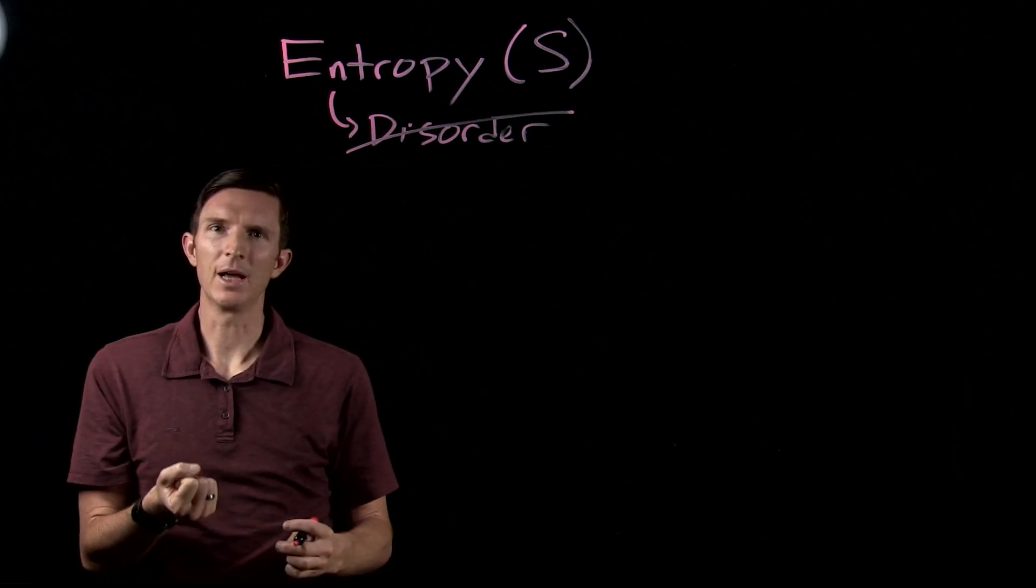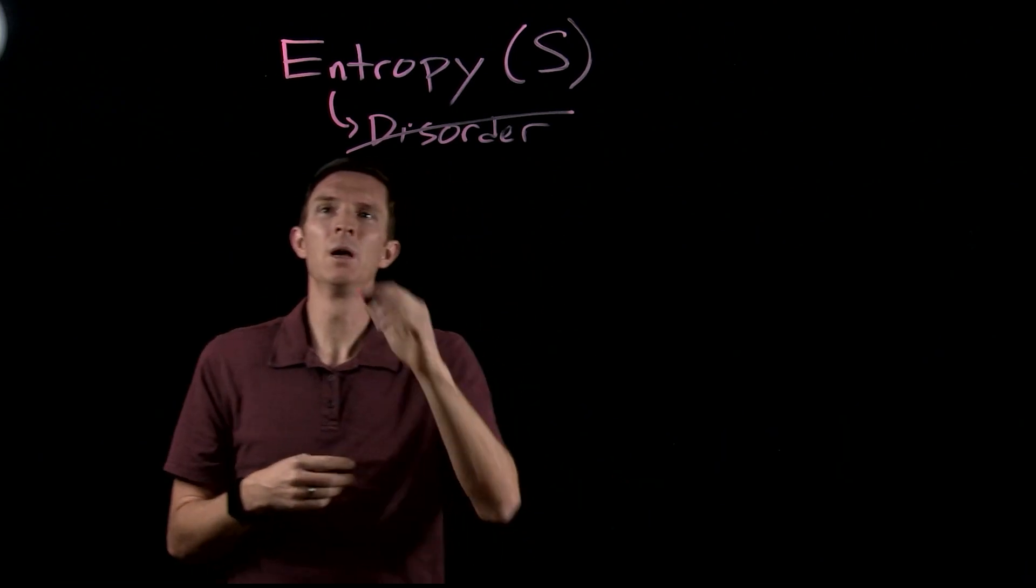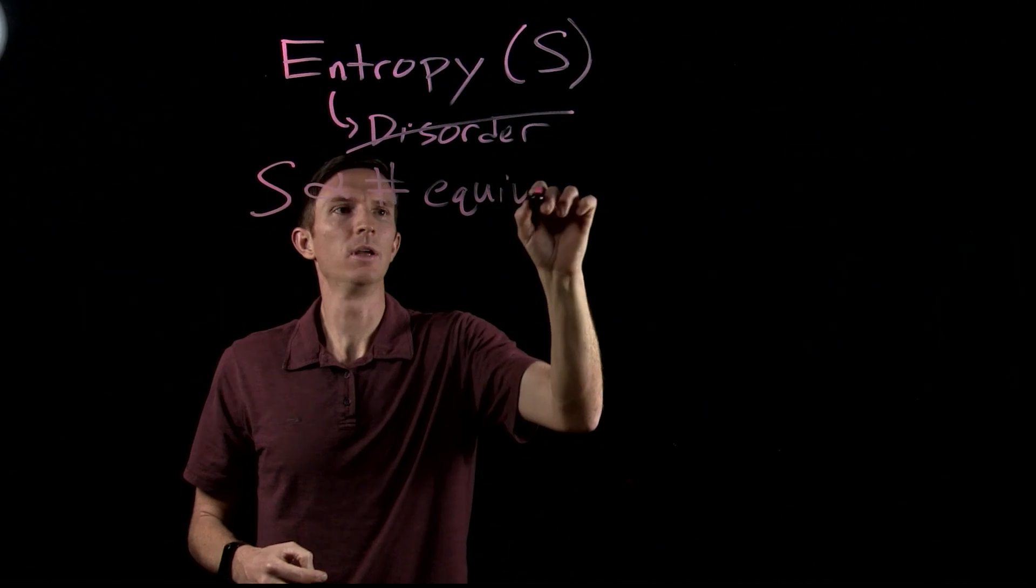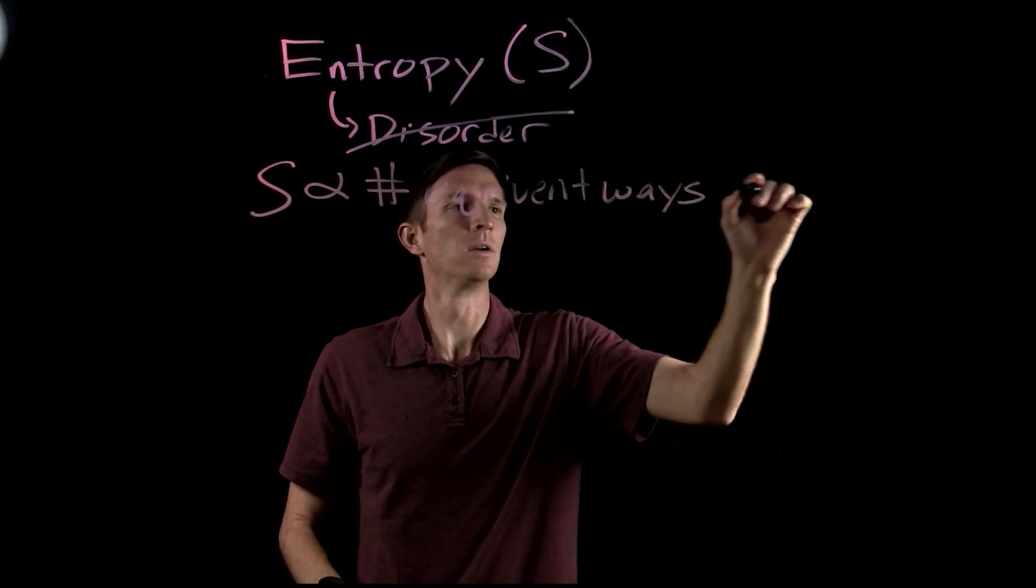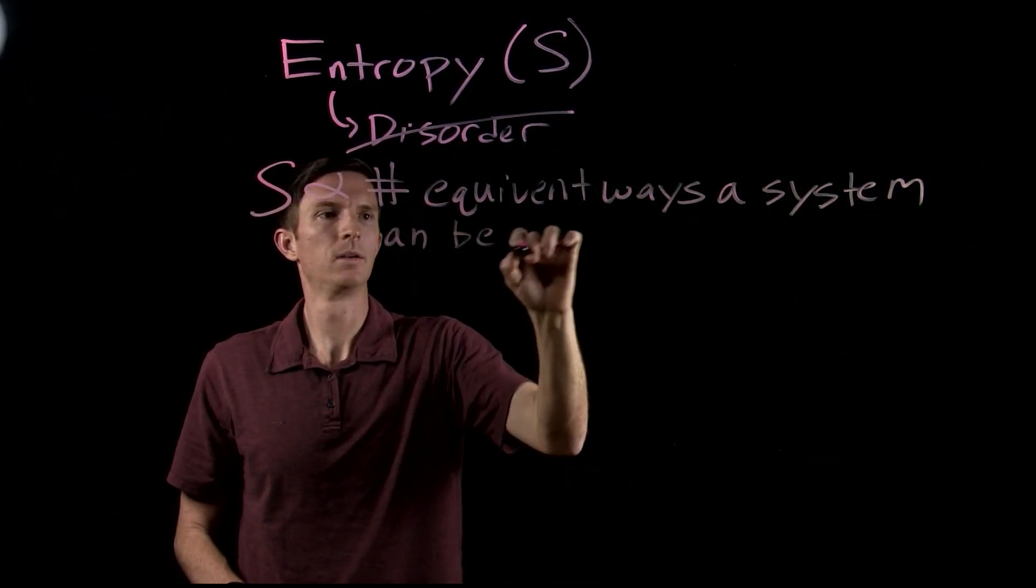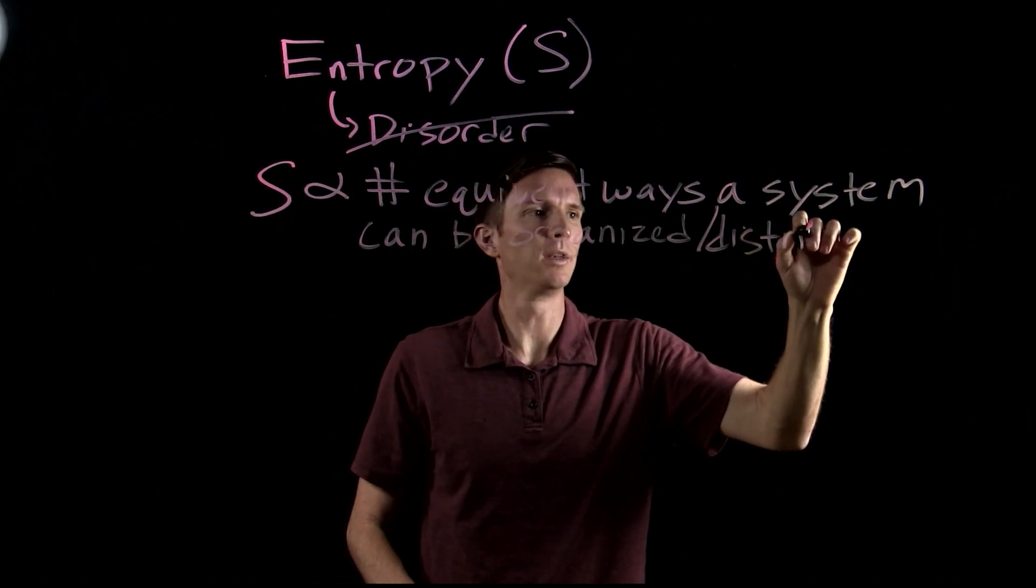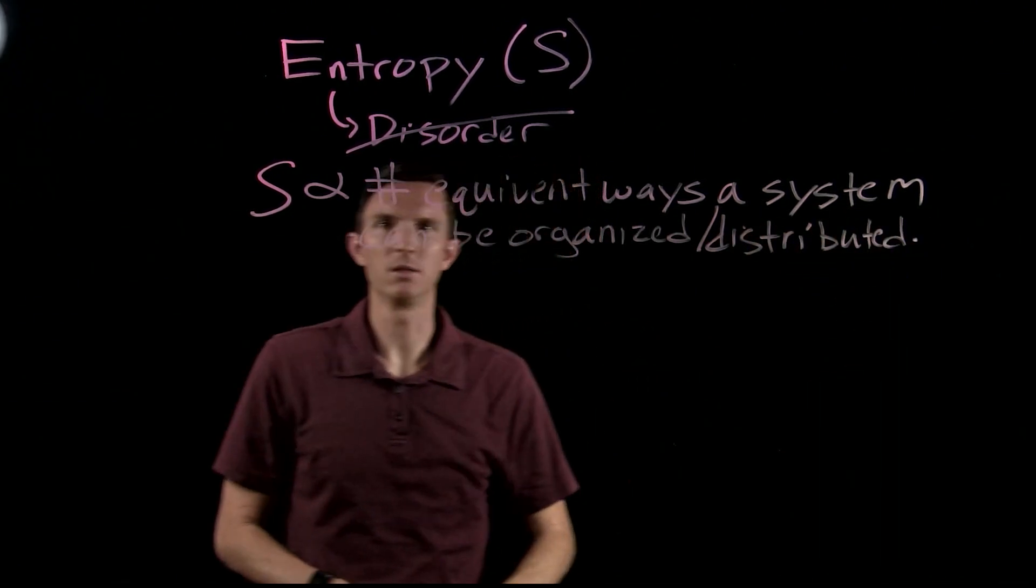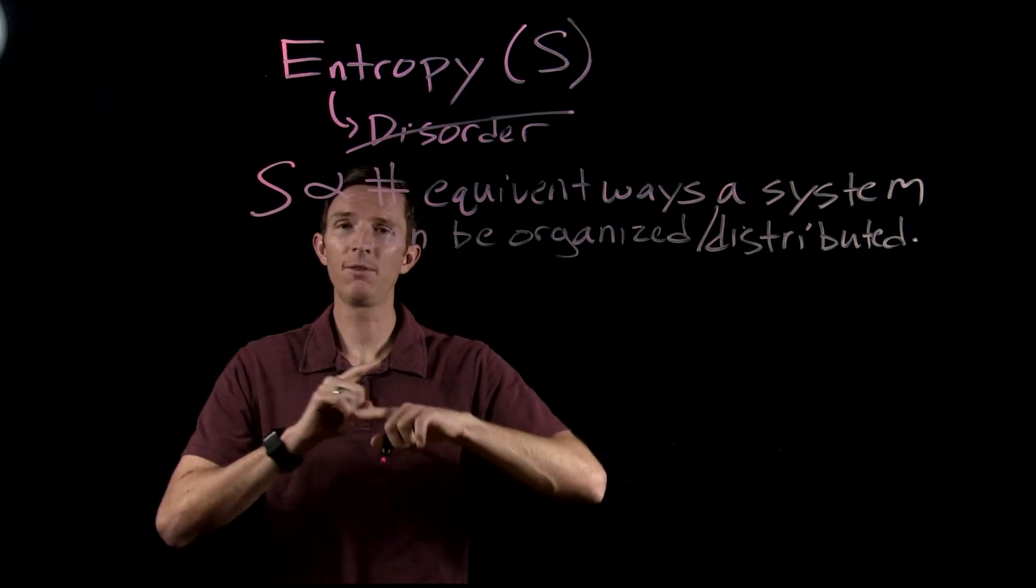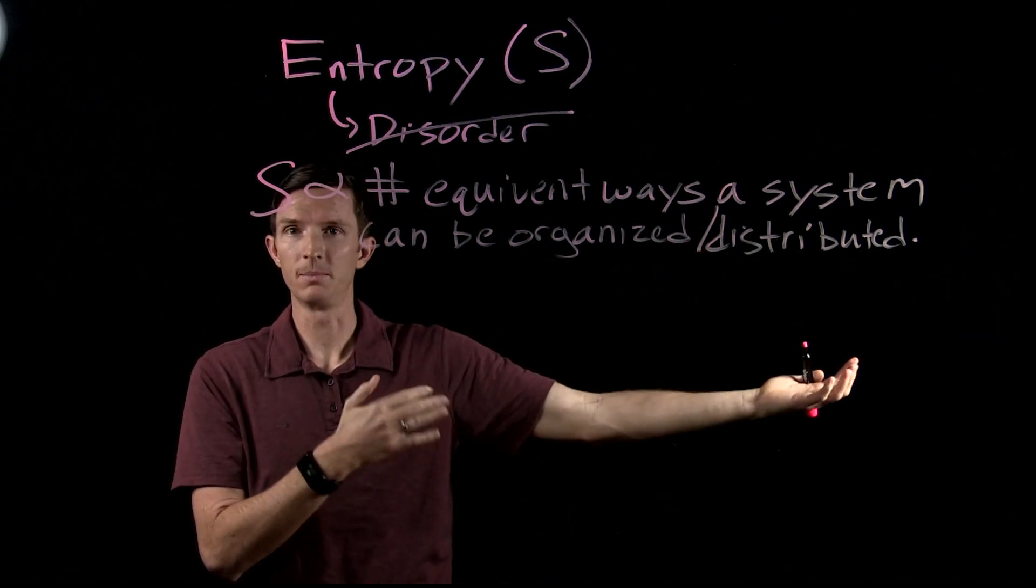So we want to get to a more basic level of what entropy is. How do we define entropy? Entropy gives us the ability to define this idea of disorder. What we're going to see is that entropy is proportional to the number of equivalent ways a system can be organized or distributed. The equivalent ways means that we haven't changed energy or any other aspect of it, but there are different ways that we can do that. So the more ways we can distribute energy, the greater the entropy.